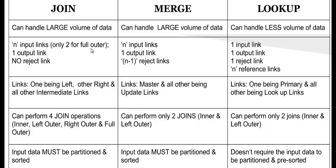Another important difference is that Join can have any number of input links, except for Full Outer join which can only have two input links — left and right. If you try to add more input links for Full Outer, it throws an error at compile time. Merge can also have any number of input links. Lookup can have only one main input link, but it can have any number of reference links.